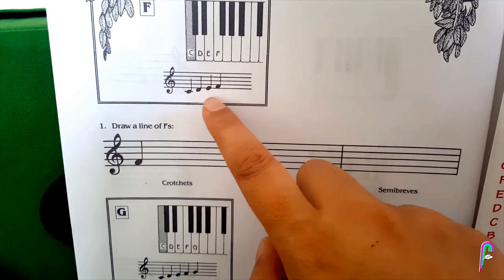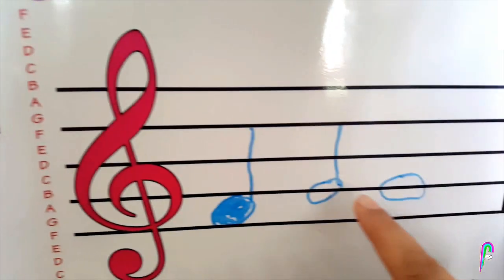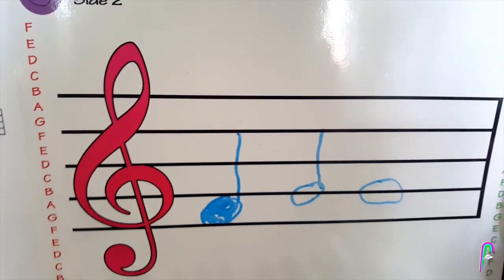And if you can see here it's got the little diagram to show you how. So it's got your C, D, E, F. And now you're also going to add G which is on the line. So give it a go.